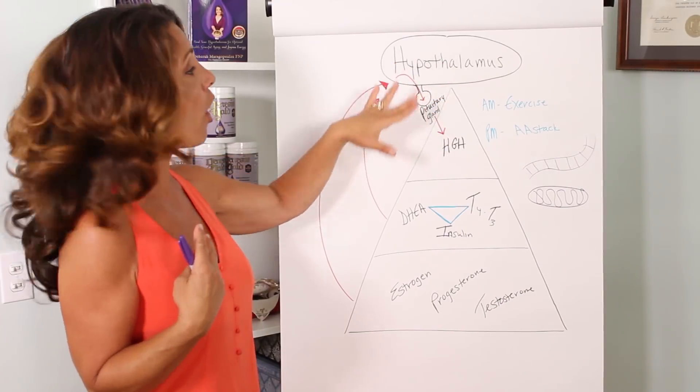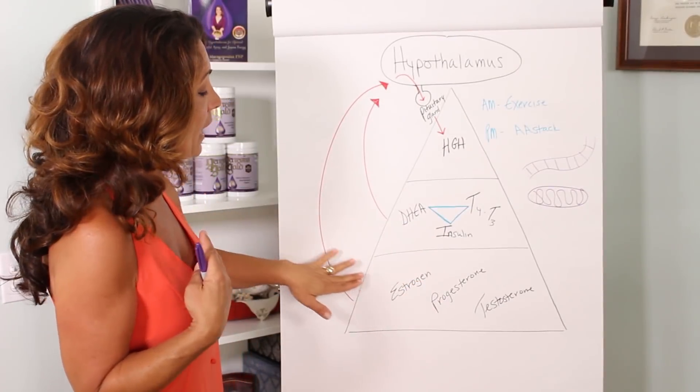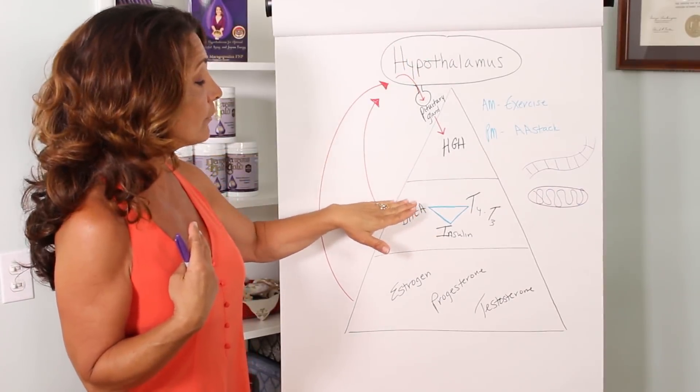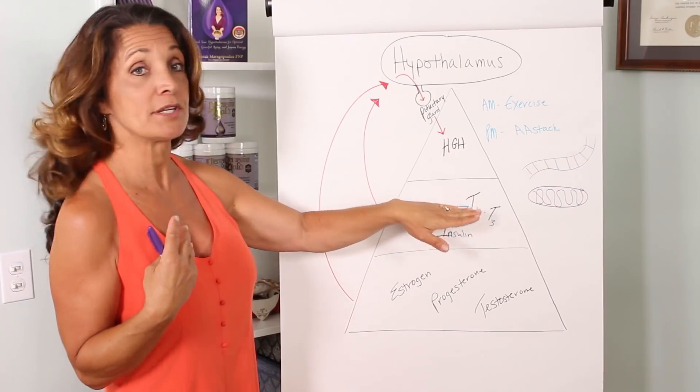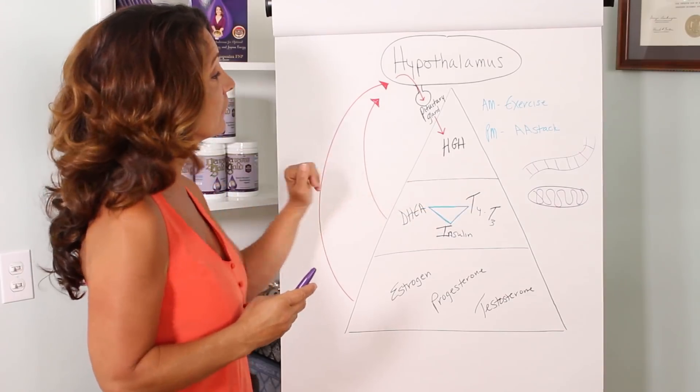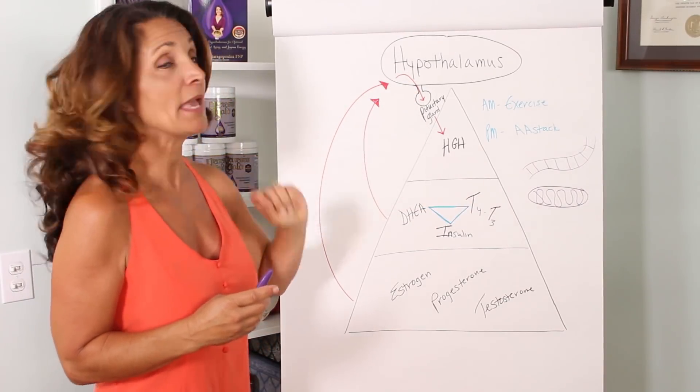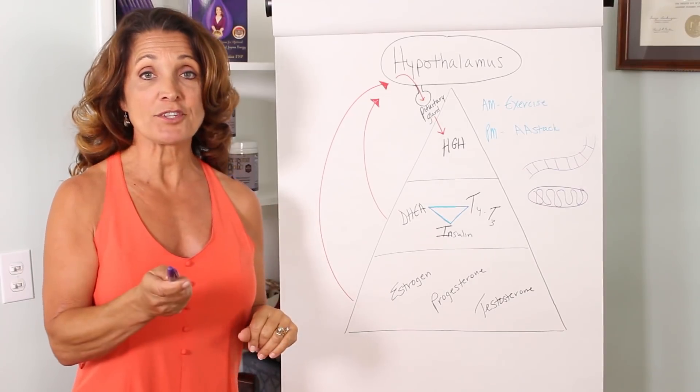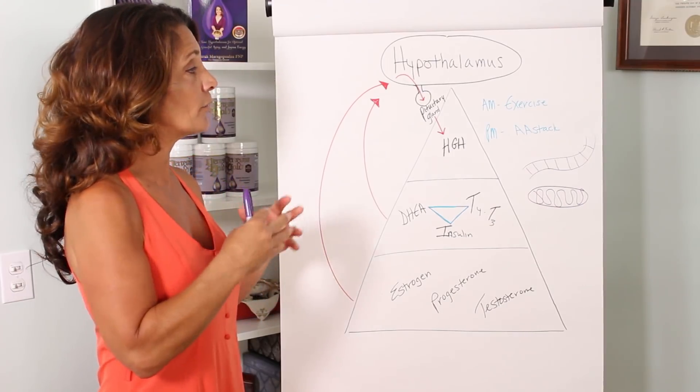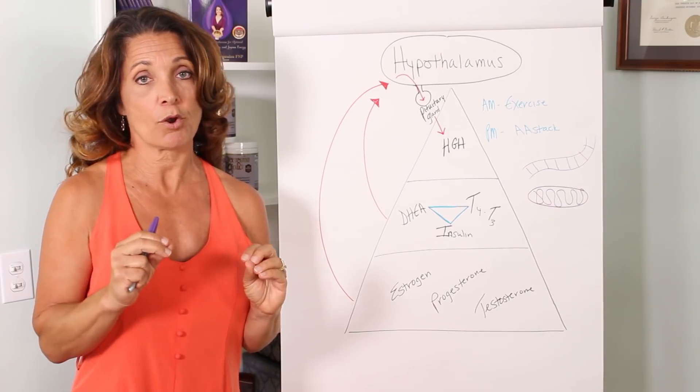Now, remember, your hypothalamus is directing all of your hormones. And it needs to know that your estrogen, progesterone, and testosterone are in balance. That your adrenals, DHEA production, your thyroid T4 and T3 production, and your insulin and glucose levels are in balance before it will stimulate the pituitary gland to make human growth hormone. Even if you're taking amino acid stack, these need to be in balance. So, always get your hormones in beautiful balance before starting an anti-aging program.